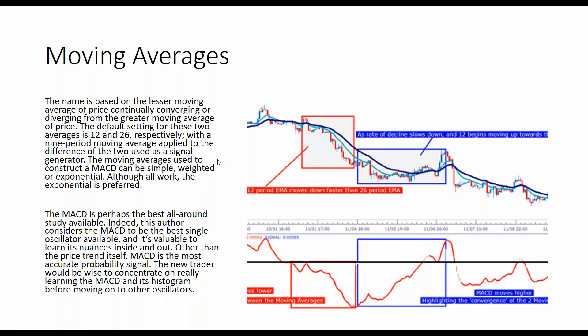The name MACD is based on the lesser moving average of price continually converging or diverging from the greater moving average. The default setting is 12 and 26 respectively. You can change them — use a 12 and 22, or a 12 and 24 — but then they're no longer MACD; they're your own indicator that you need to back-test. The indicator developed and tested by Gerald Appel is 12 and 26. Why use MACD instead of just the moving averages directly? Because a simple moving average is just the beginning step in the calculation. MACD is a four-point derivative that gives you a much better indication of how the market is working.